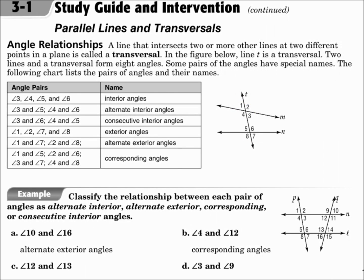The angles that are in the same position are corresponding angles, like angle 1 and angle 5 — they're both in the top left of their group. Angle 2 and angle 6 are both in the top right. Angle 3 and angle 7 are both in the bottom right. And angle 4 and angle 8 are both in the bottom left. When they're in the same position, they're corresponding angles.